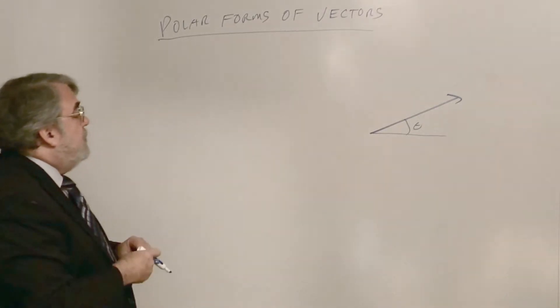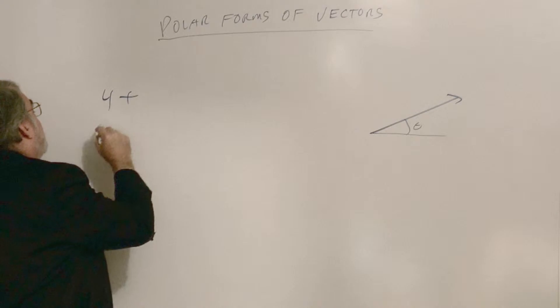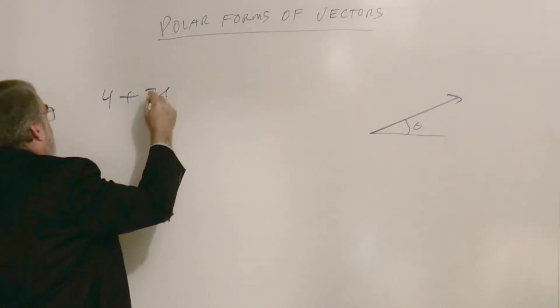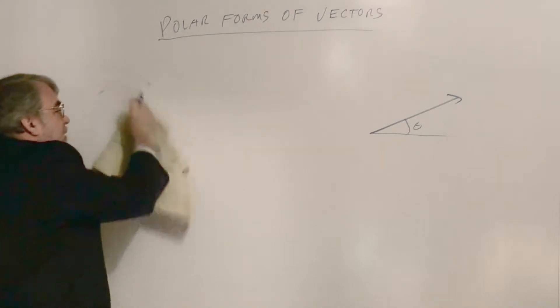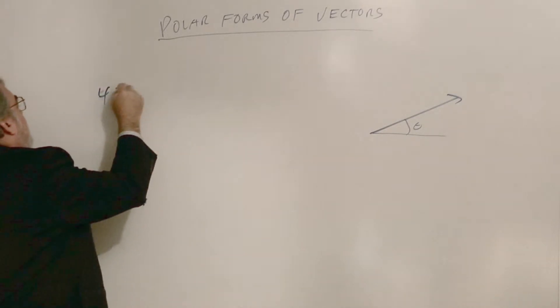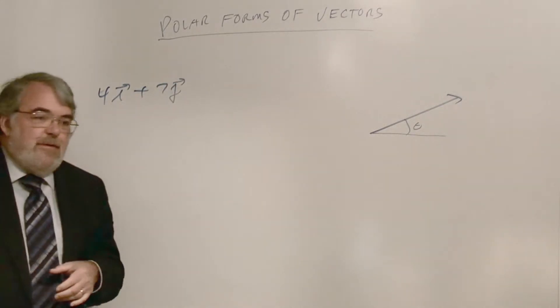And so, for example, 4i - I'm still in complex number mode, sorry about that. All right, 4i plus 7j. 4i plus 7j. And let me draw this picture.